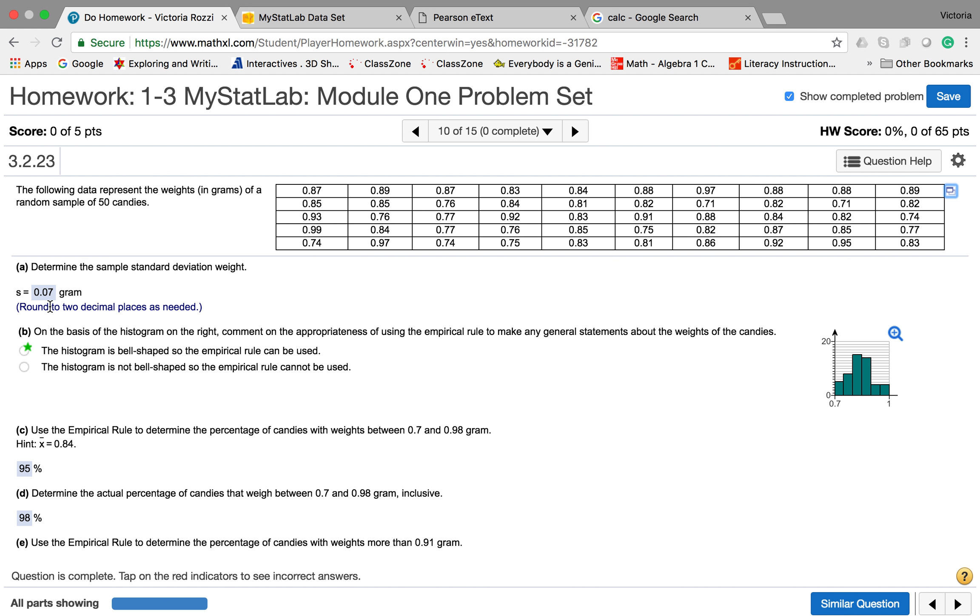Now if you look here, they're saying on the basis of the histogram on the right, comment on the appropriateness of using the empirical rule. If we want to use the empirical rule, we're looking for a fairly symmetric graph, approximately normal.